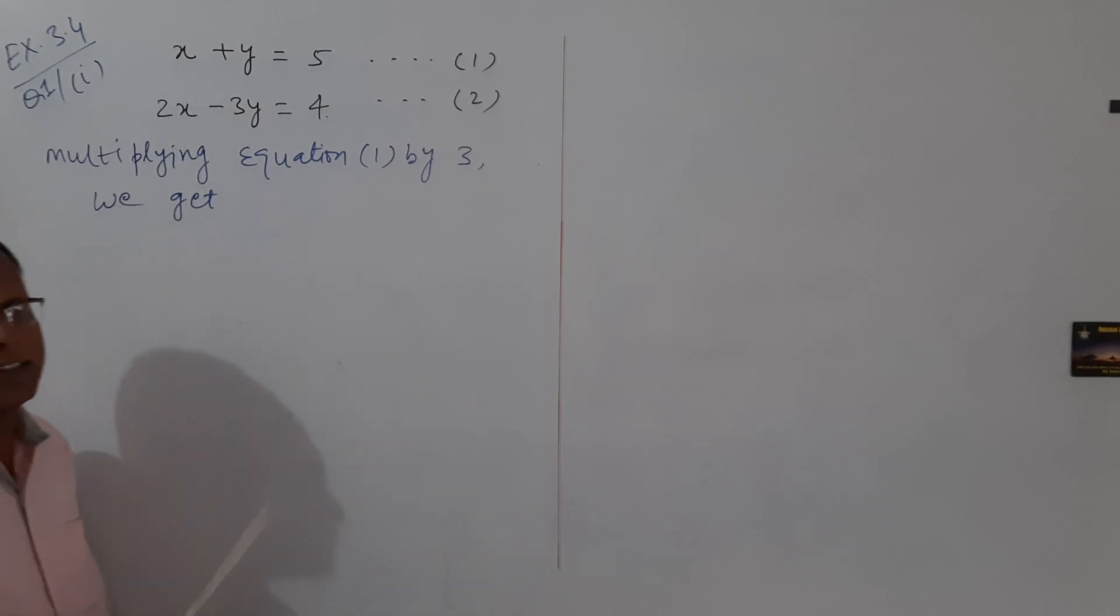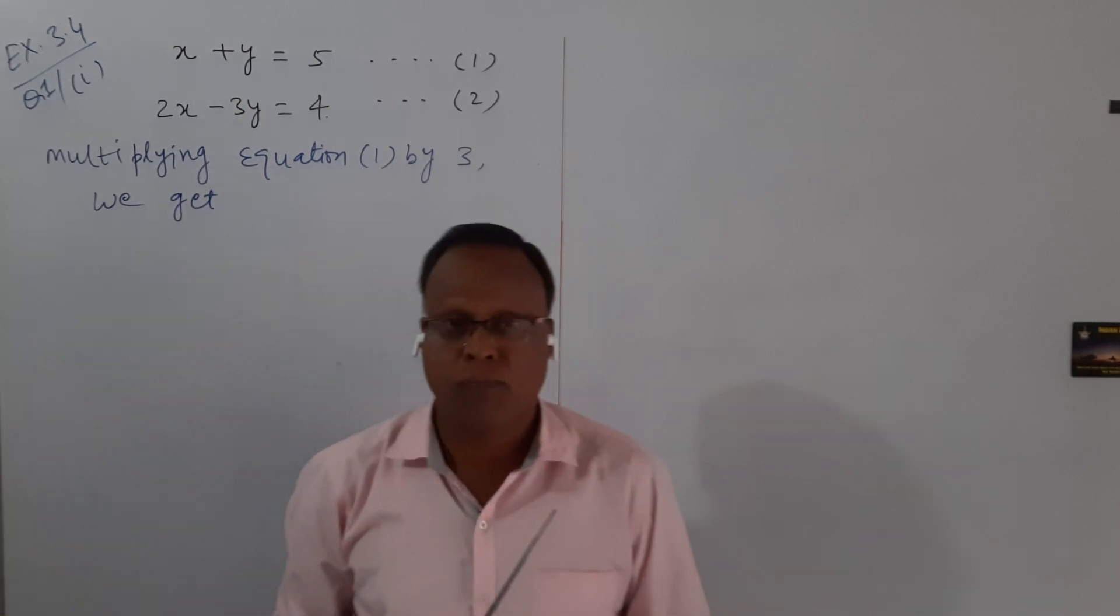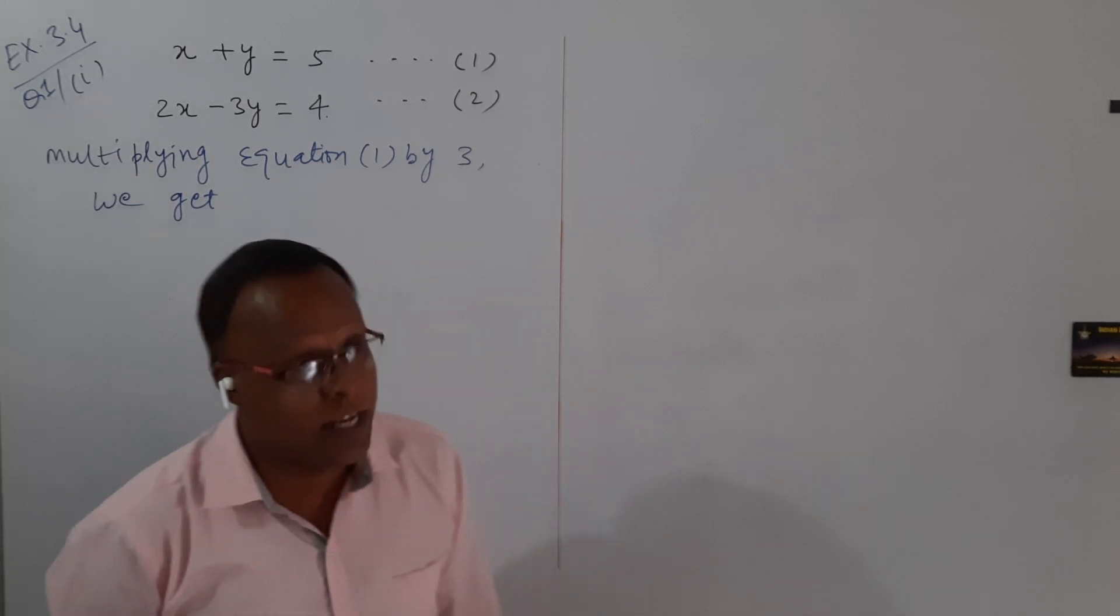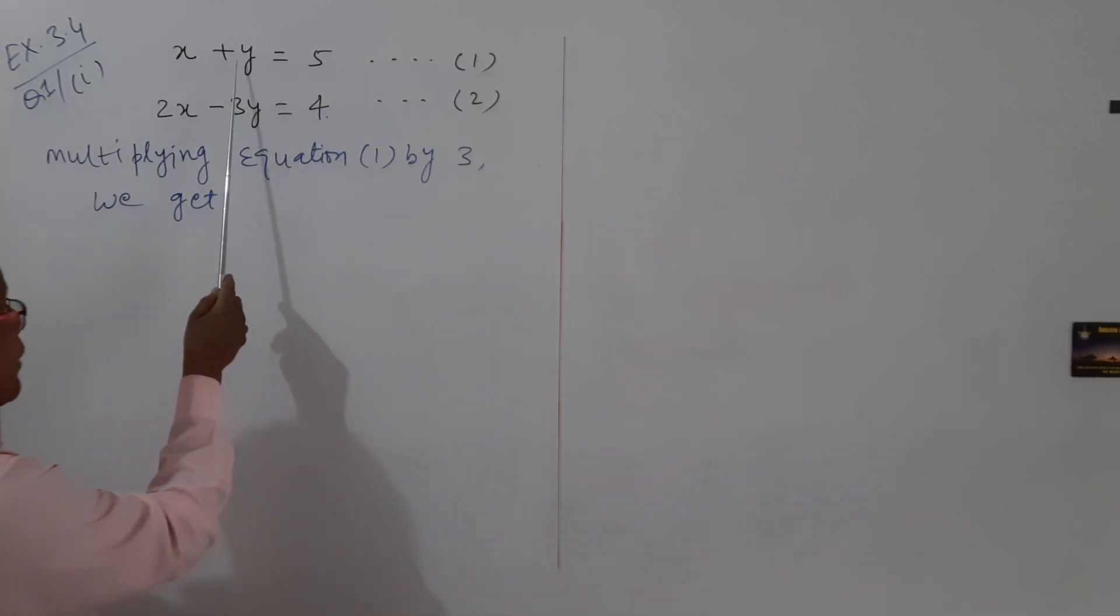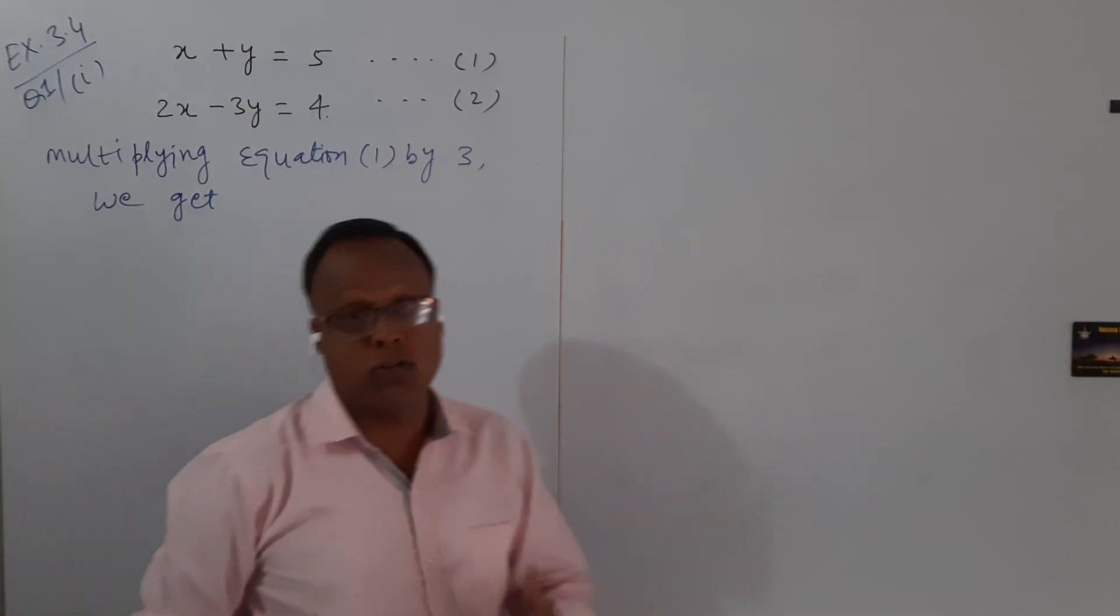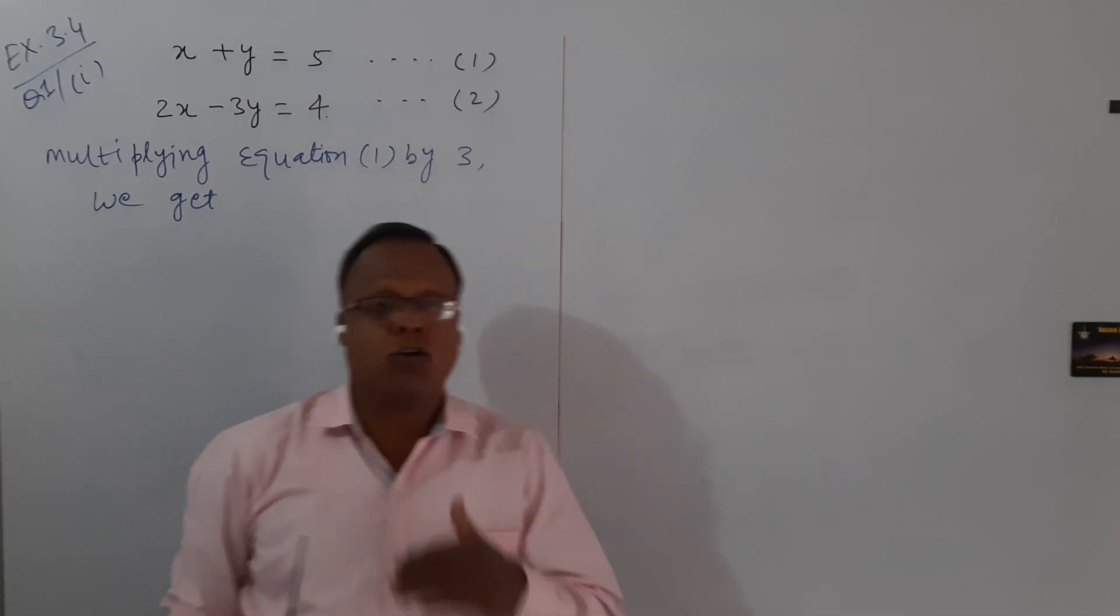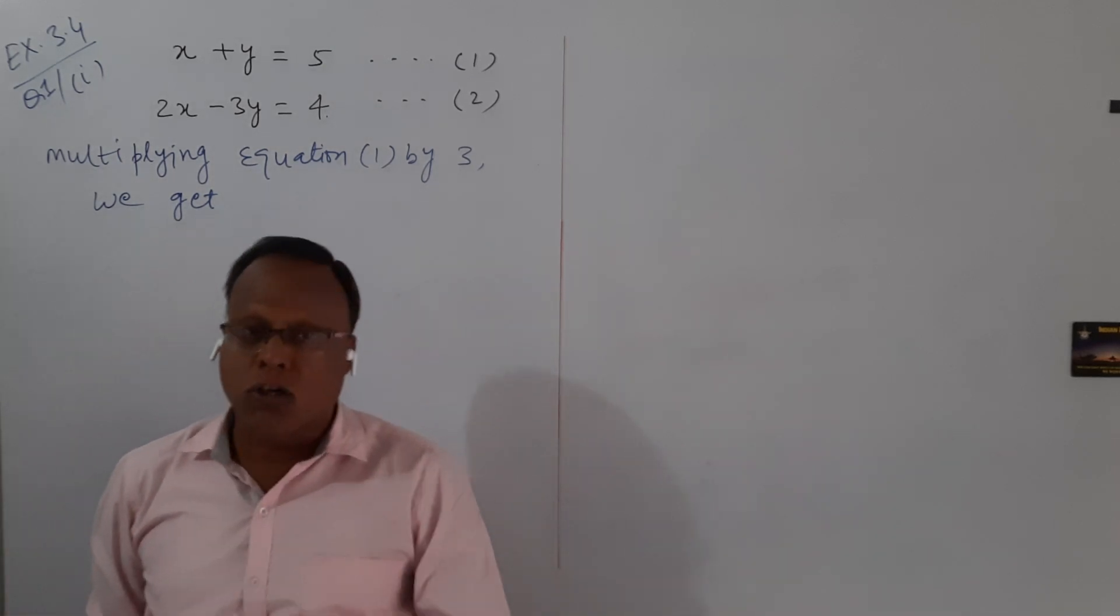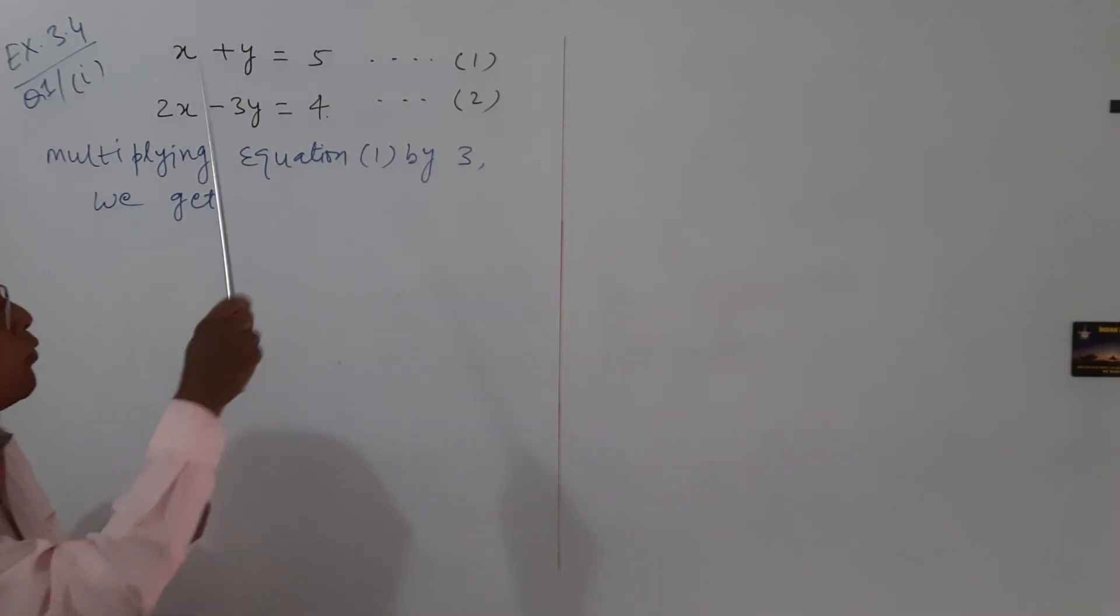Then this becomes 2x and they are the same. Another way, we multiply this equation by 3. Then this becomes 3y, so the coefficient of y becomes the same. Try to make the coefficient of x or coefficient of y in both equations the same.